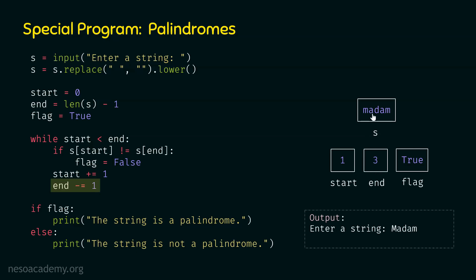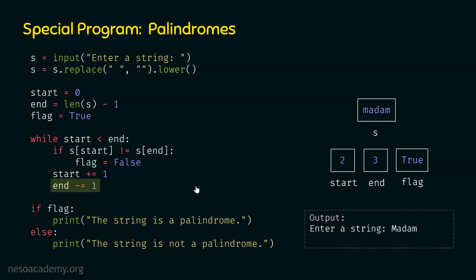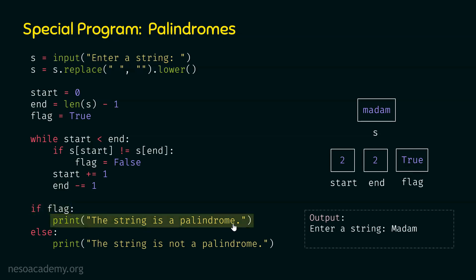Now start is one and end is three. One is less than three, so we go inside the while loop and check this condition. We know that s[start] is the same as s[end] — these two letters are the same. Therefore this condition is not satisfied, so flag is not set to false. We jump to increment start by one — this becomes two — and decrement end by one — this becomes two. Both start and end are now pointing to the same letter 'd.' This time, start less than end is false, so we exit the loop. Flag is still true, so the message 'the string is a palindrome' is displayed. This string is indeed a palindrome.